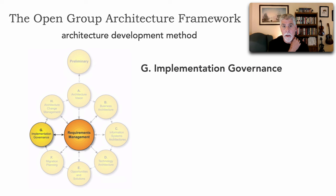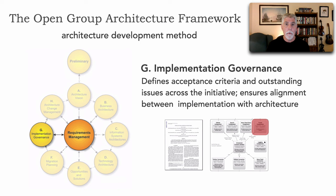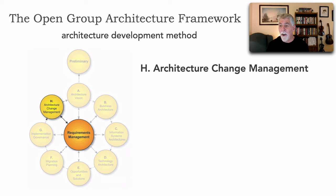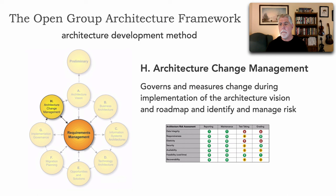Phase G is Implementation Governance. This phase describes all the acceptance criteria for knowing we're done and tracks any outstanding issues. This is usually where we identify unique constraints and challenges, and we leverage fitness functions to ensure alignment between the implementation and the corresponding architecture. Phase H, Architecture Change Management, is governance and measurement during implementation to make sure we're in line with the architecture vision and we identify, manage, and mitigate risk all along the way in each iteration.